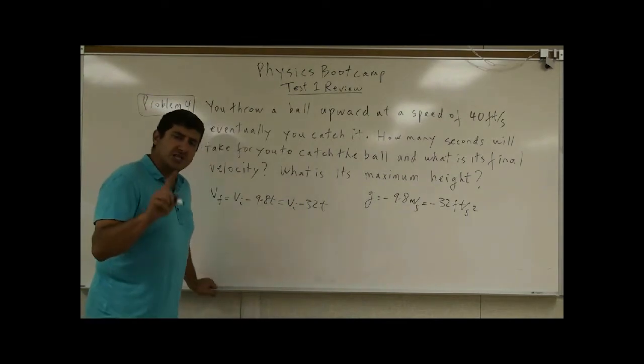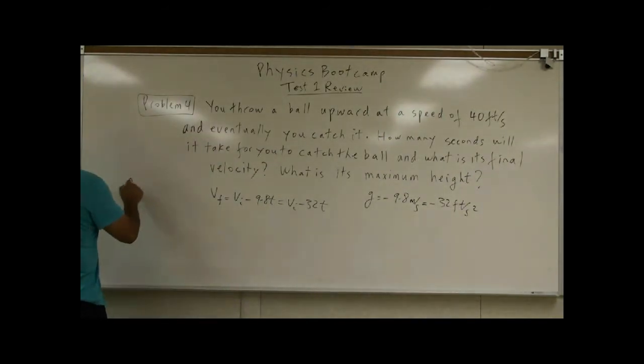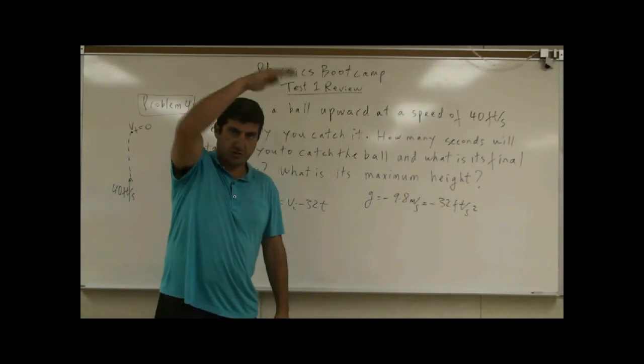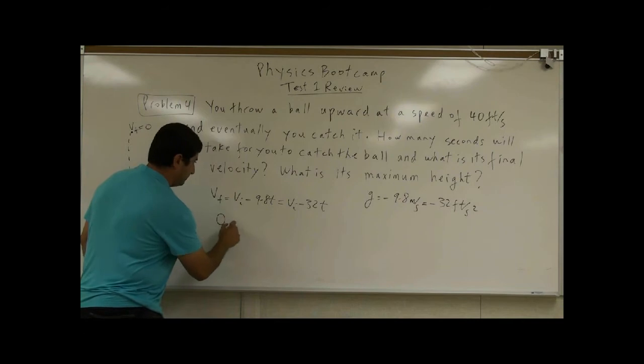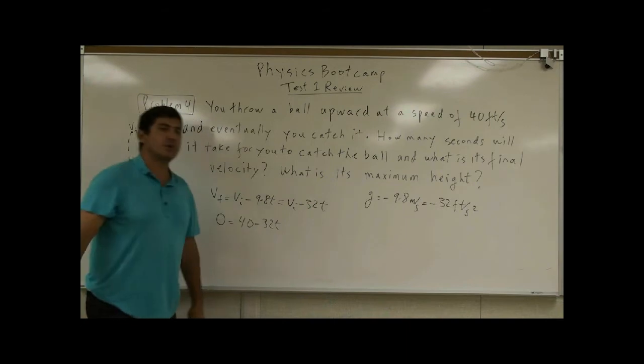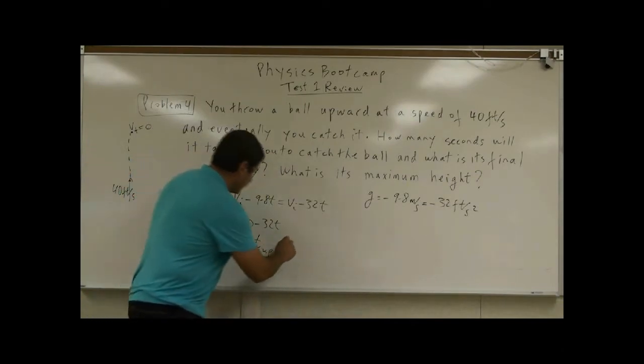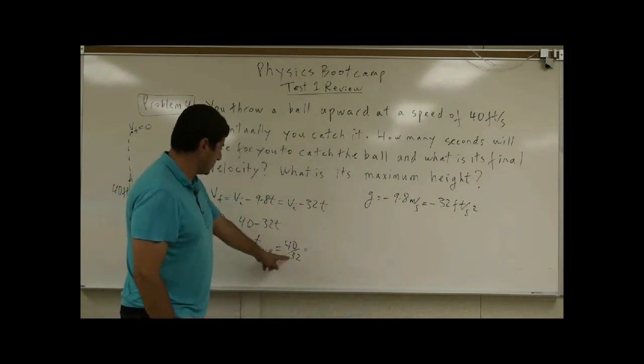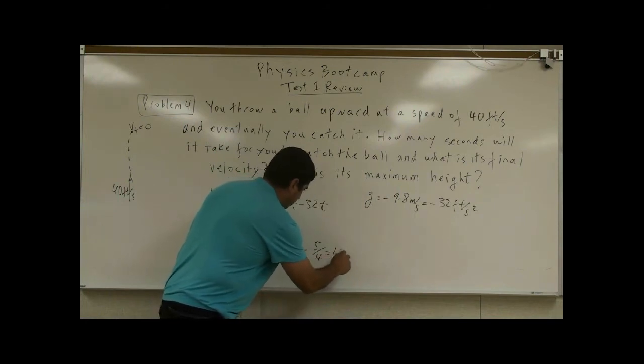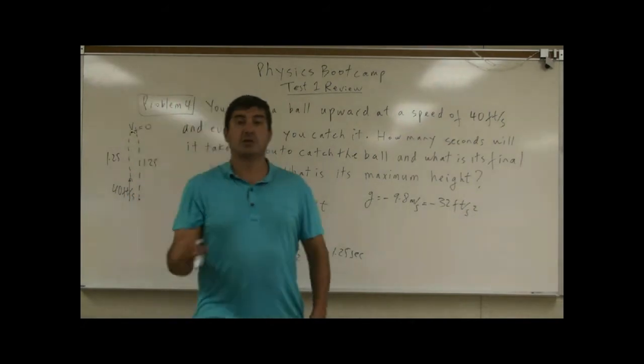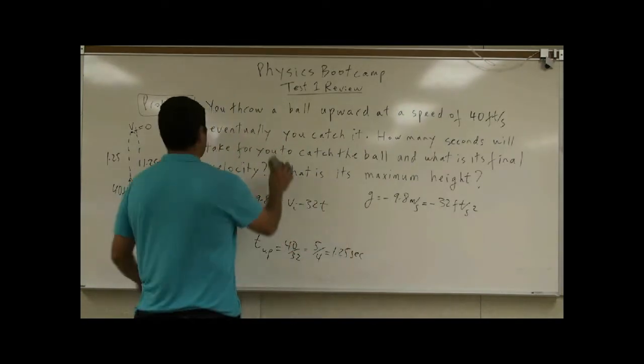So what I could do is I can find out what is the time that it takes to go up. So you throw it up at 40 feet per second. It goes up, it goes up. The velocity final at the top is zero, right? So momentarily, it reaches a velocity of zero, then it comes back. So you put the final velocity here zero. Initial velocity is 40. This one gives you the time that it takes to go up. So T is equal to, we can call it T up, 40 divided by 32, and 8 goes into this five times, 8 goes into this four times, and it's 1.25 seconds. So if it takes 1.25 seconds to go up, it will also take 1.25 seconds to come down. So that means the answer to the total time is two and a half seconds. So it's going to take two and a half seconds to go up and down.